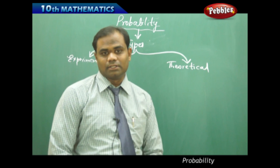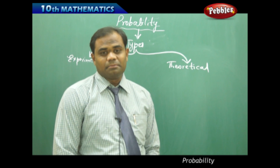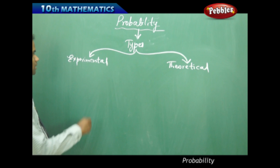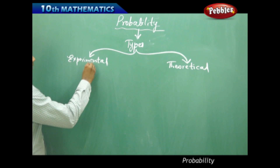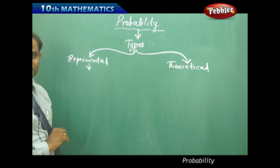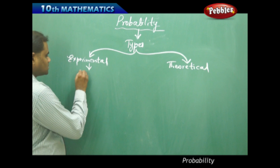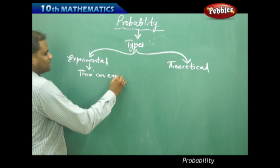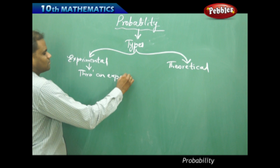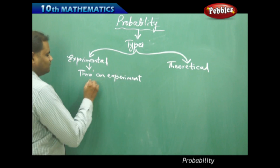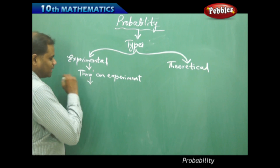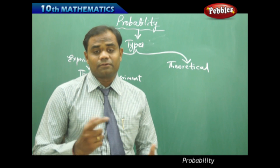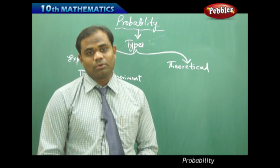Experimental probability is conducted through an experiment. Different experiments give different values of probability, which is what makes this type distinct from theoretical probability.